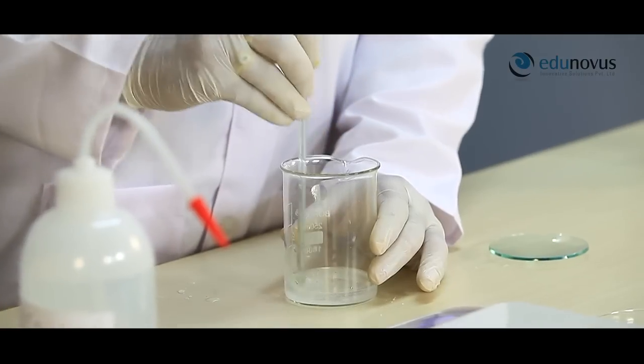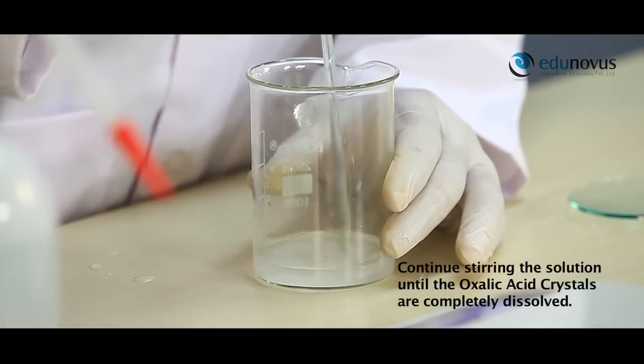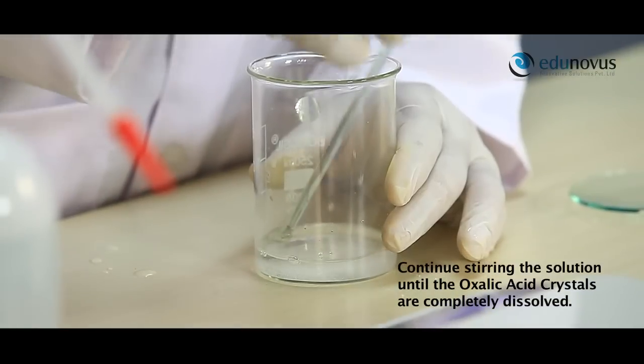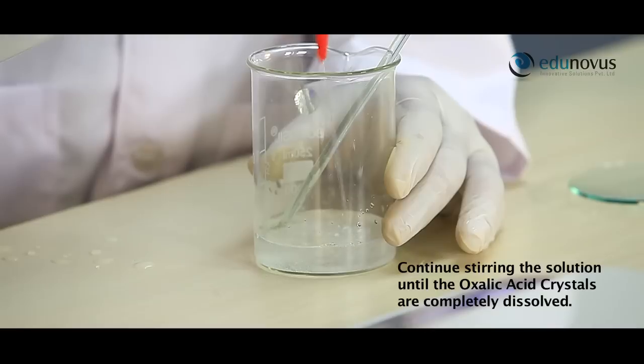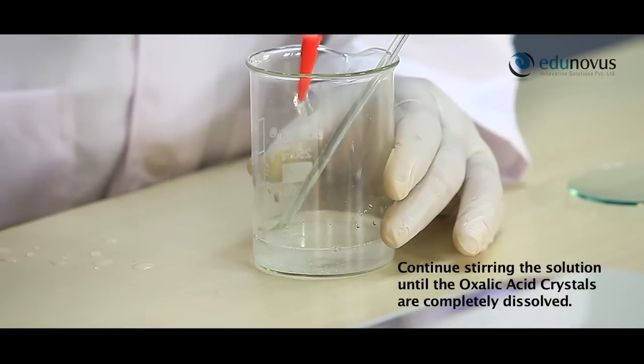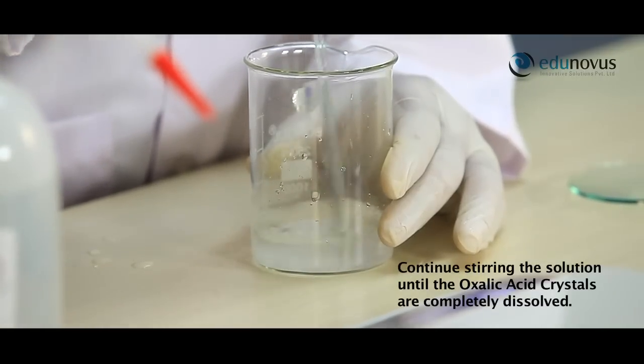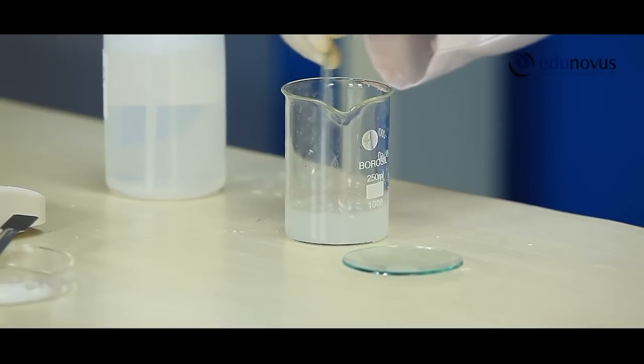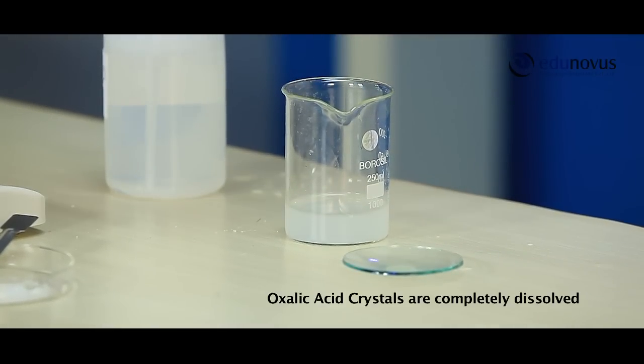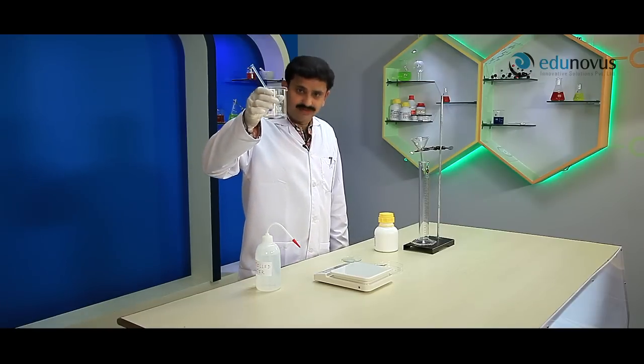Let the oxalic acid crystals dissolve by stirring gently with a clean glass rod. Here in this moment you can add a little amount of water if needed. Here you can see that the oxalic acid crystals are completely dissolved.